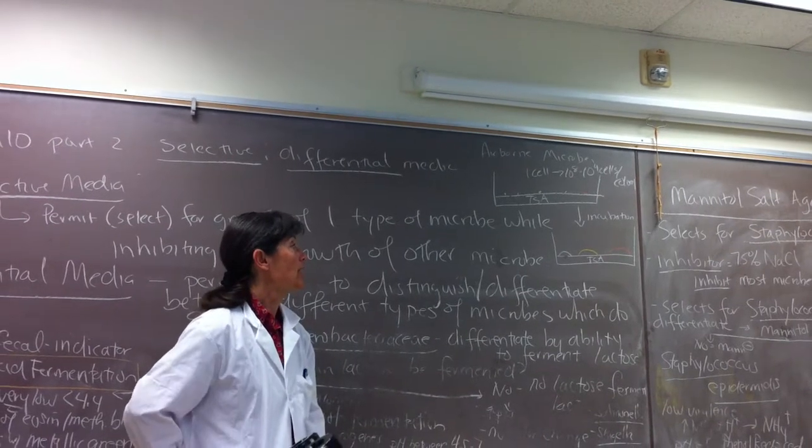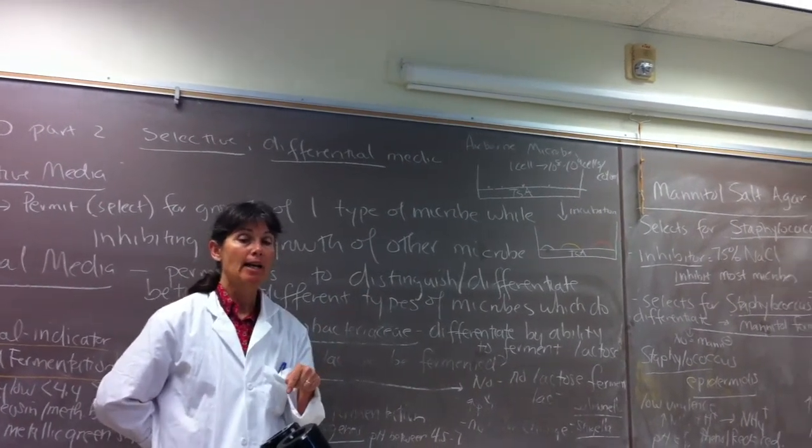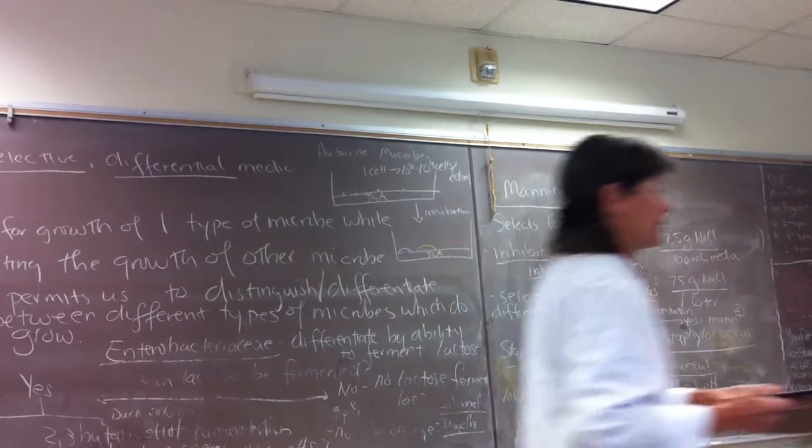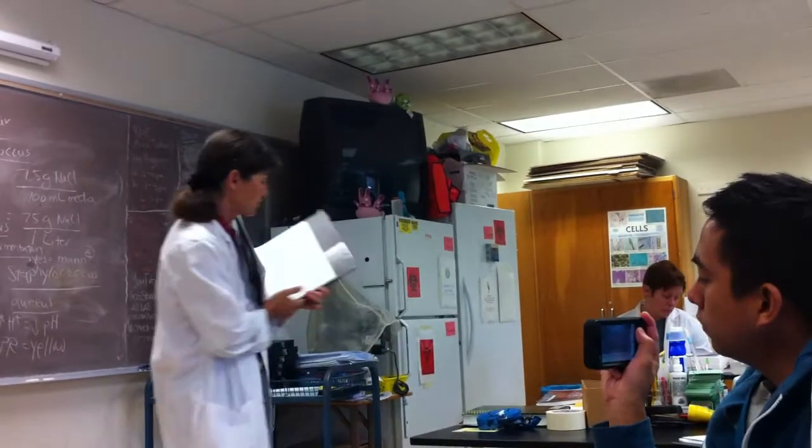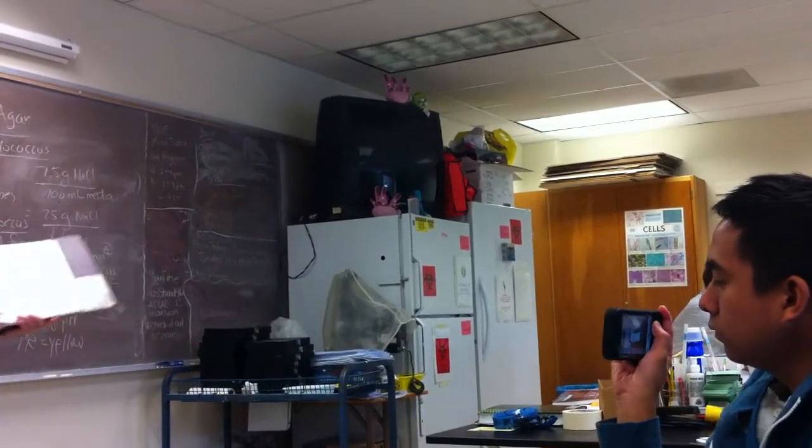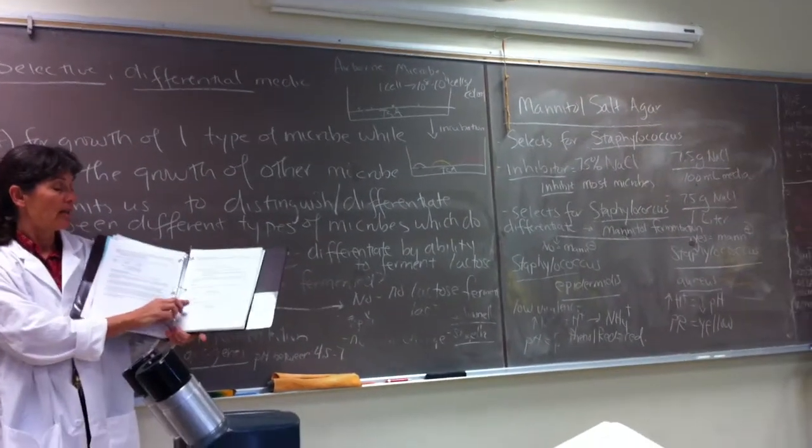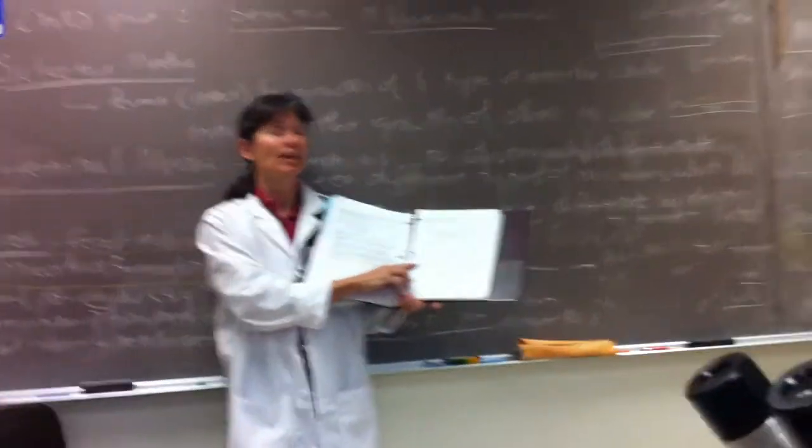So what we're going to do today is we're going to have you count the total number of colonies on your plates, and we will enter that data in your lab manual. So on page 94 in your lab manual, you'll see that there are two tables for the data that you're going to put in this journal.